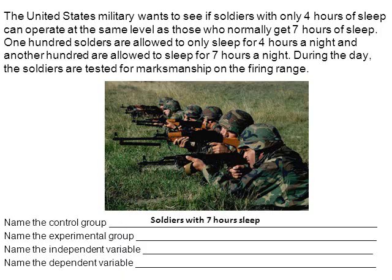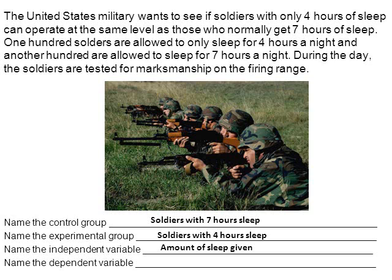For the control group, these are the test subjects that receive the normal treatment — and it's normal to get about seven hours of sleep. The experimental group is what's different: those who may only get four hours of sleep. The independent variable is what's been changed between the two groups — the amount of sleep they are given. The dependent variable is the data we collected: the score on the firing range — whether they can hit the target or bullseye.